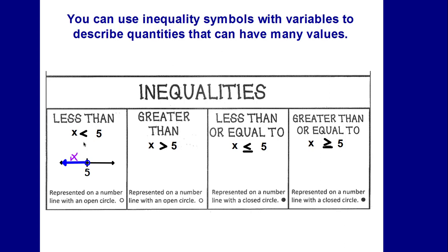Looking at x is greater than 5, the number line would look like this. You still have the open circle at the 5 because x is not equal to 5, and because x is greater, our x value line will go to the right.